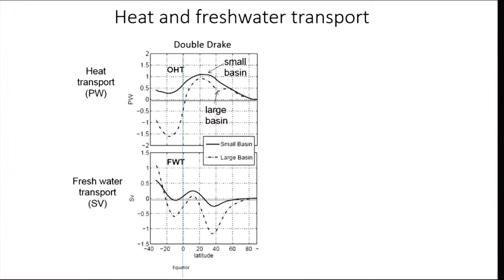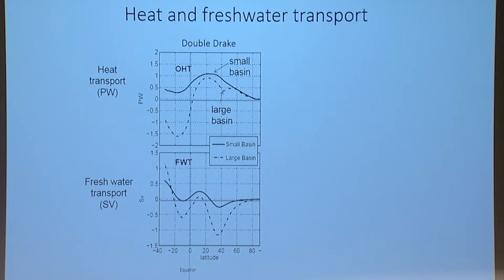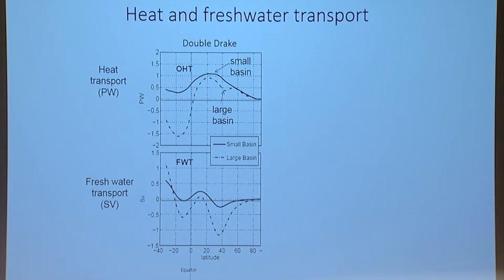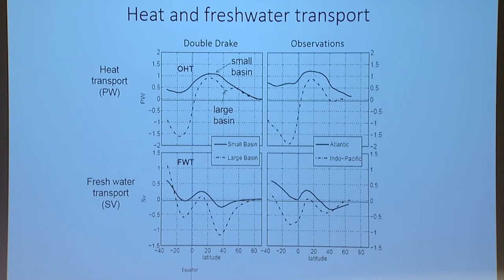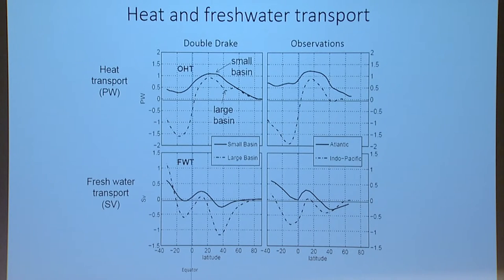You can look at the heat and fresh water transport in this system. This is the meridional energy transport as a function of latitude, from the equator moving northward. This shows the transport of energy across the equator from south to north in the small basin, in petawatts — on the order of 10^15 watts crossing the equator. Comparing this to observations — the actual observed transport inferred from data — there's a striking similarity between the two. This tells us that the land doesn't really matter in this regard; we've been able to construct, in a cartoon-like fashion, a world that looks a little bit like our present by just having a few sticks in the ocean.